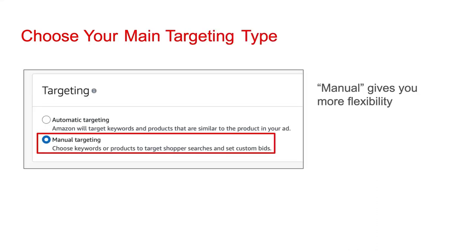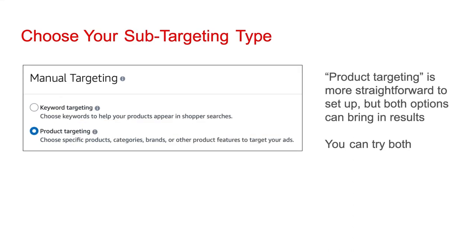You're then going to be asked to choose your targeting type. Manual targeting gives you more flexibility — I recommend you go with that. You're then going to be asked to pick a sub-targeting type. I realize you're being asked for a lot of information, but it all makes sense and it does not take a long time to enter into Amazon.